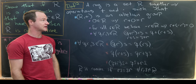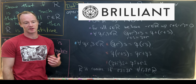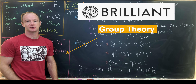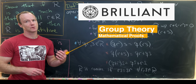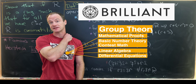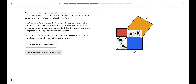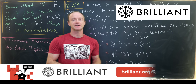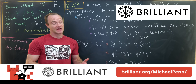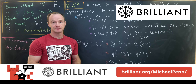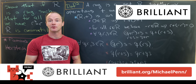If you'd like to learn more abstract algebra, in particular group theory, check out today's sponsor Brilliant. They have math courses at all levels, including group theory and all the prerequisites you'd need — like how to write mathematical proofs, basic number theory, contest math, linear algebra, and differential equations. To get started for free, go to brilliant.org/MichaelPenn or click the link in the description. The first 200 people to click will get 20% off Brilliant's annual premium subscription.